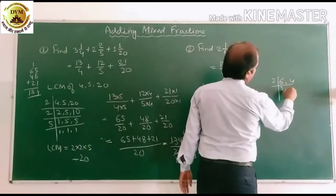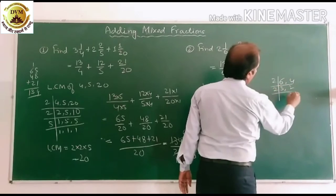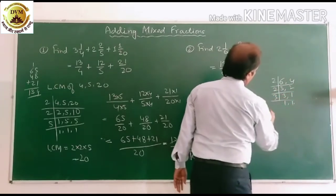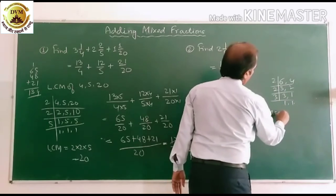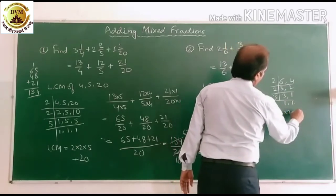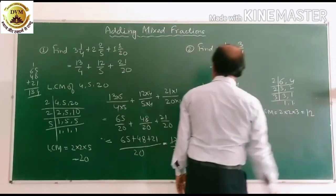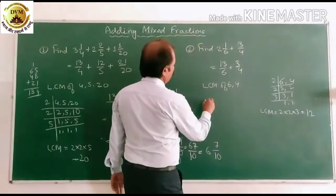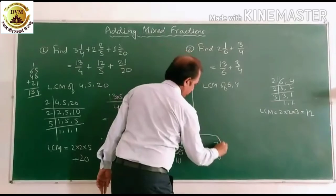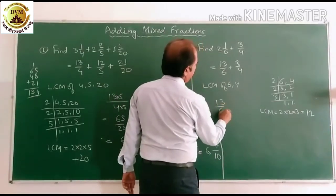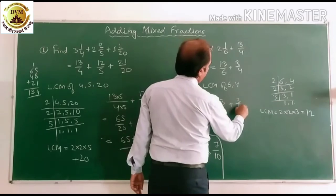So LCM of 6 and 4. So this is 2 divides 6 and 4. Here we can change into 3 and 2. Then we can change again. So 1, 2, 3 is 2, 3 and 3 by and 8, the LCM is 12.